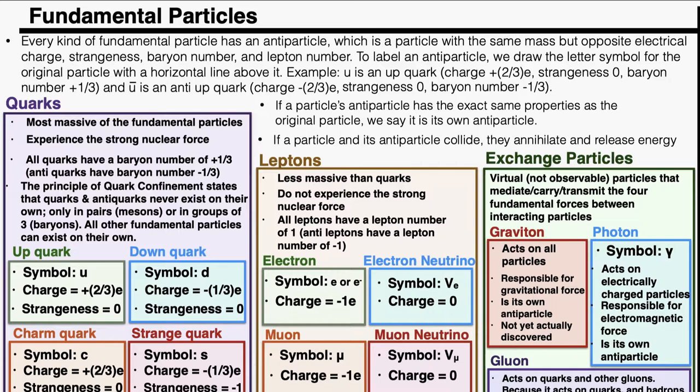Before going through each particle type, I need to cover antiparticles. Some of this information — like baryon number and lepton number — won't be easy to visualize right now. For now, just get the information down and we can use it to solve problems later. Every fundamental particle has an antiparticle with the same mass but opposite electrical charge, strangeness, baryon number, and lepton number.